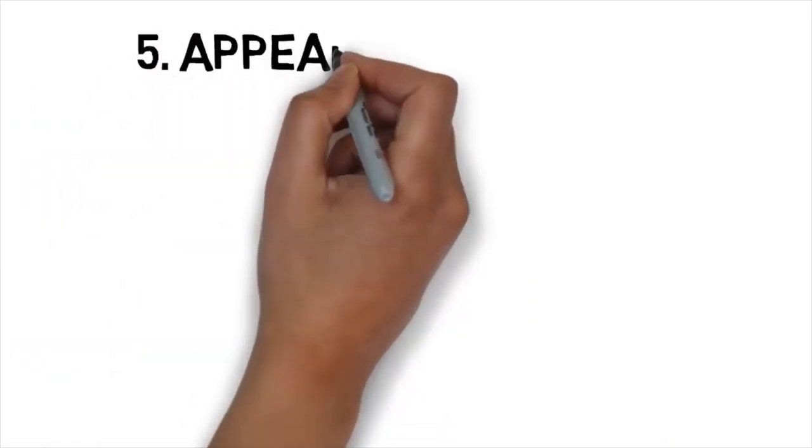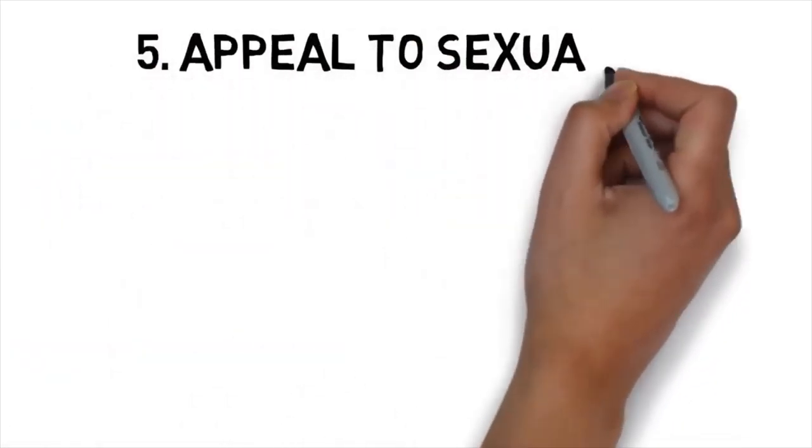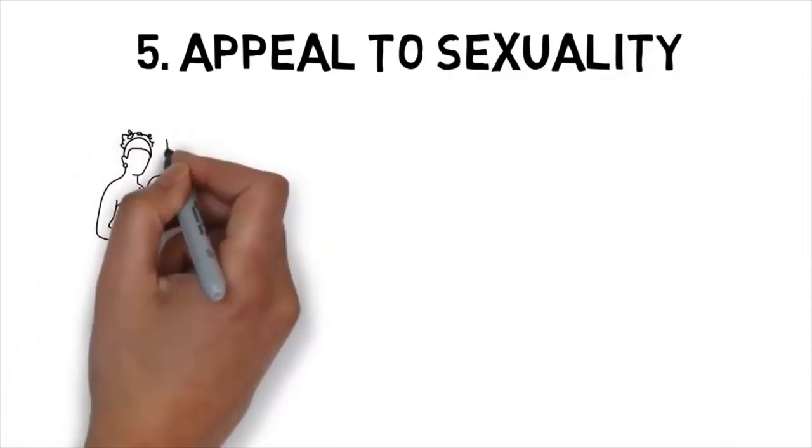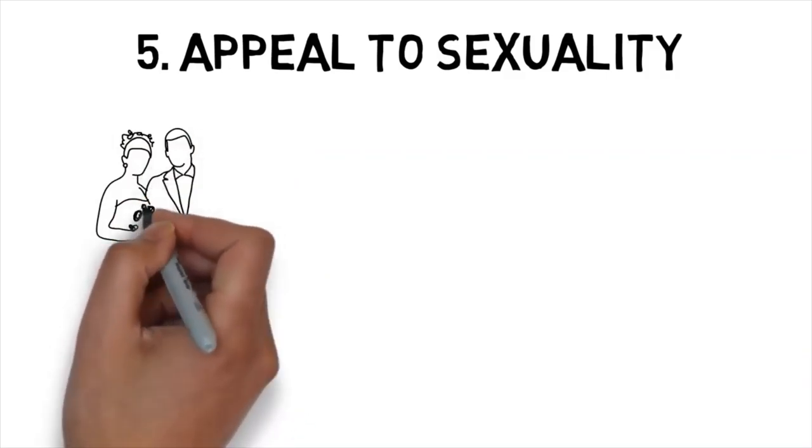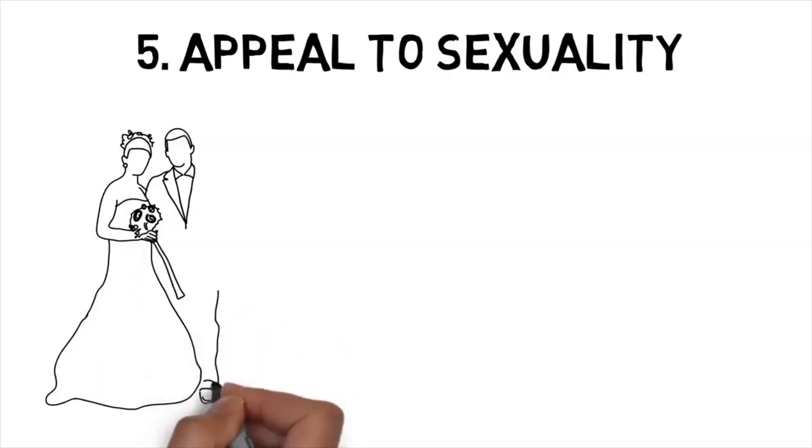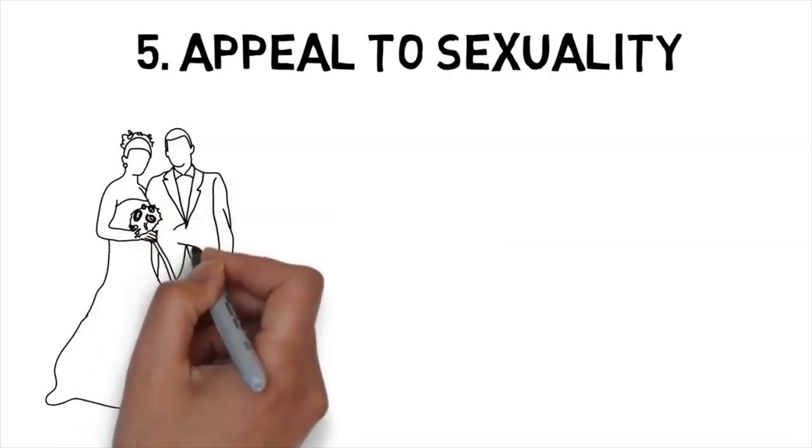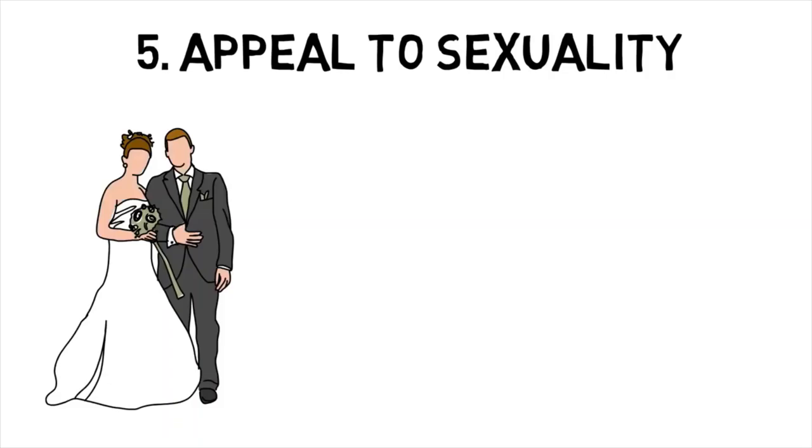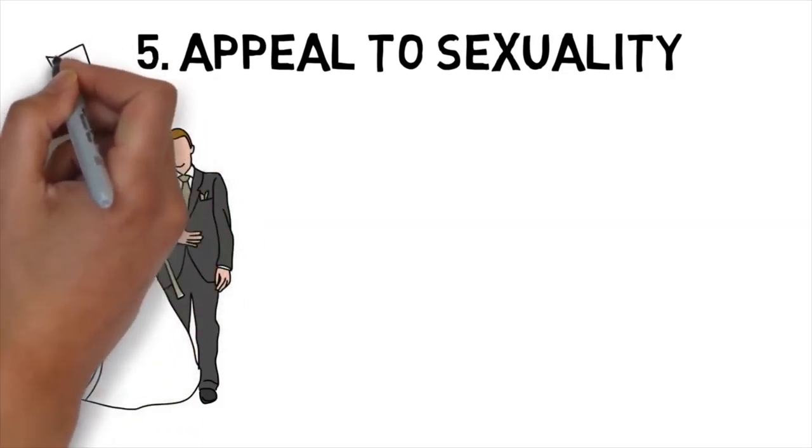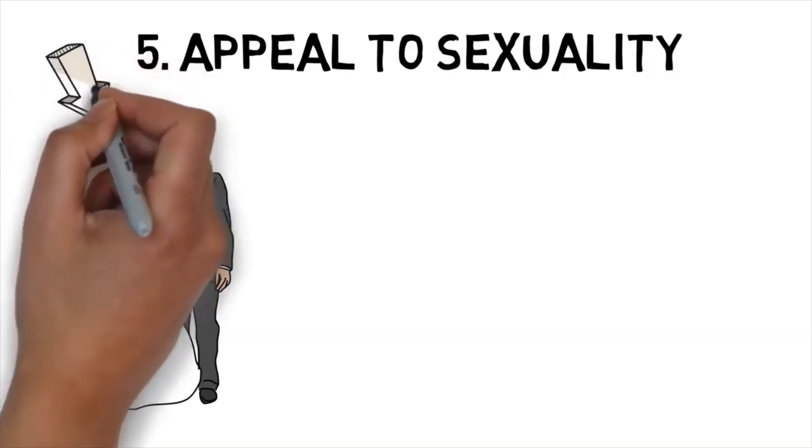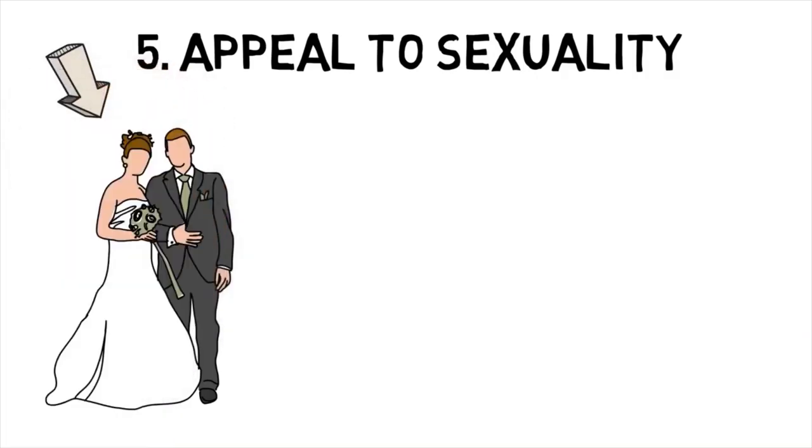Number 5. Appeal to Sexuality. This persuasion technique is based off of one very simple biological concept, the motivation in every animal to reproduce. Thus, appealing to sexuality, in its purest form, simply means using this animal motivation to get exactly what you want. Since this is a natural motivation, ingrained in the brain of every single animal, it's very hard to control, and that is what makes it so effective.